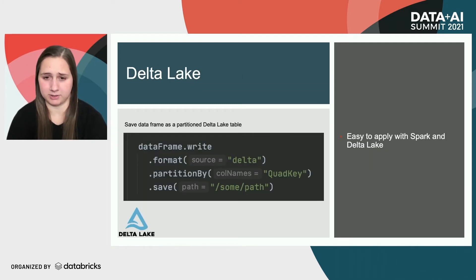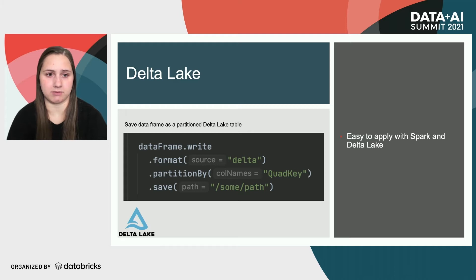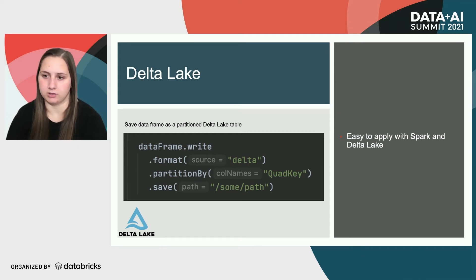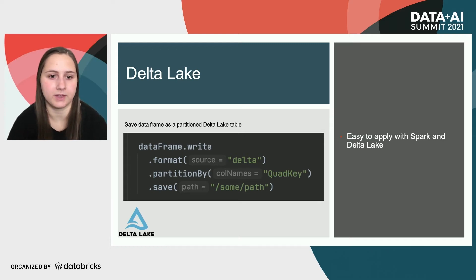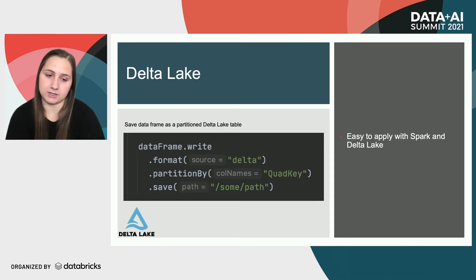Here I just wanted to show how easy it is to apply with Spark and Delta Lake. In this code snippet, we're simply saving a data frame as a partitioned Delta Lake table. You enter the format as Delta and then partition by the column name you've assigned to that partition — in this case, it would be quad key. That's what we did to partition our data set by space.